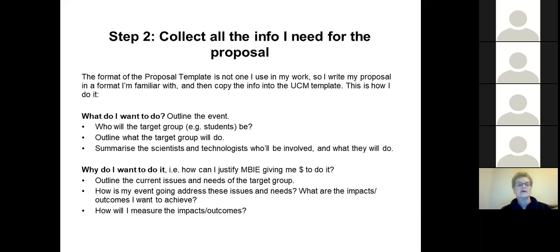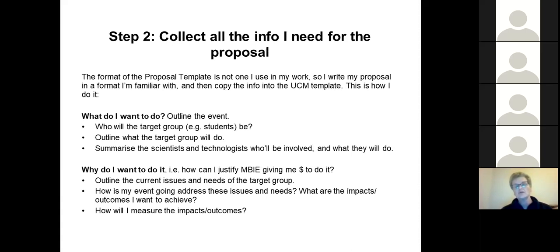The first thing I do is write an outline of what I want to do, who's going to attend the event, what they're going to do, and I summarize the scientists and technologists who will be involved. That's like the introduction or background. Then I go into detail on why I want to do it and how I'm going to justify MB giving me money — I outline the current situation, the issues and needs of the target group, how my event will address these, what impacts and outcomes I want to achieve, and how I'm going to measure these — for example, using SurveyMonkey.